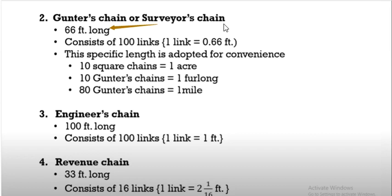This means we have 66 feet long divided by 100, that means 0.66 feet per link. Engineer's chain is 100 feet long and consists of 100 links, so one link equals 1 foot. Revenue chain is 33 foot long and consists of 16 links, so one link equals 2 and 1/16 foot.